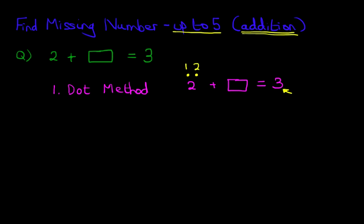And we're going to count forwards from the 2 until we reach our answer of 3. So let's do that. 1, 2, 3. So how many more dots did we need? We needed just one dot. And that is the answer. 1. 2 plus 1 equals 3.